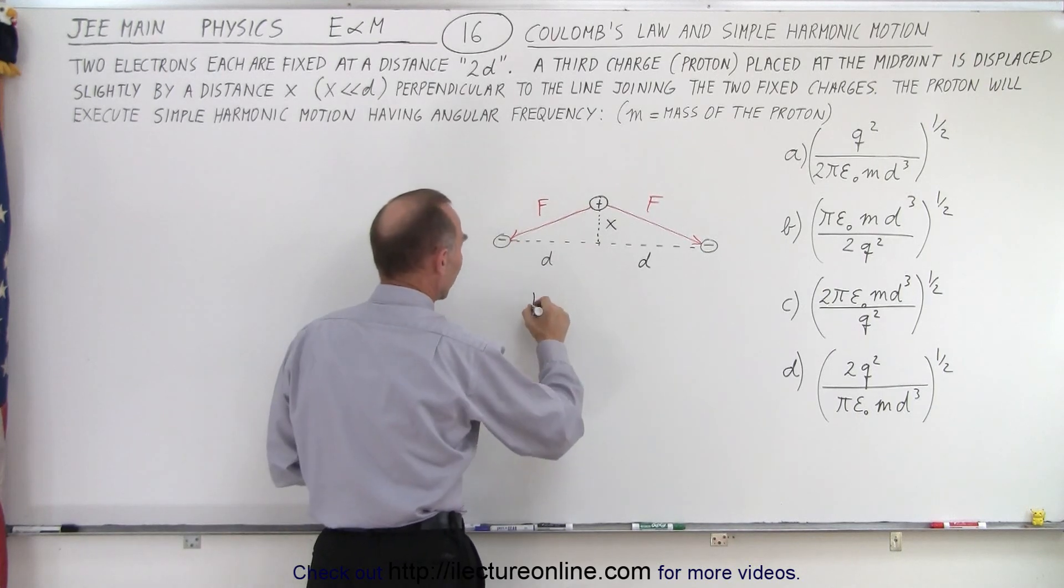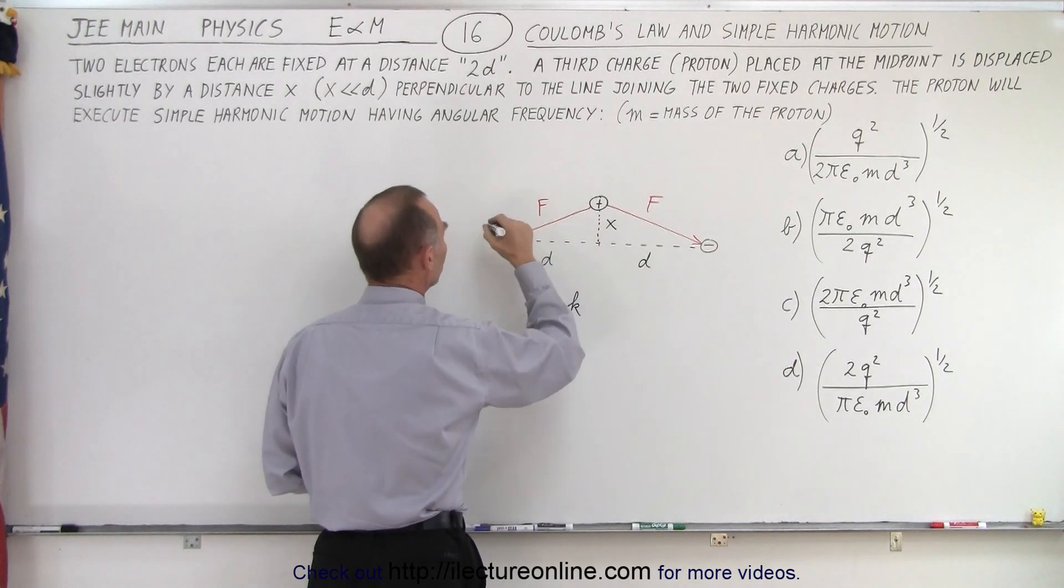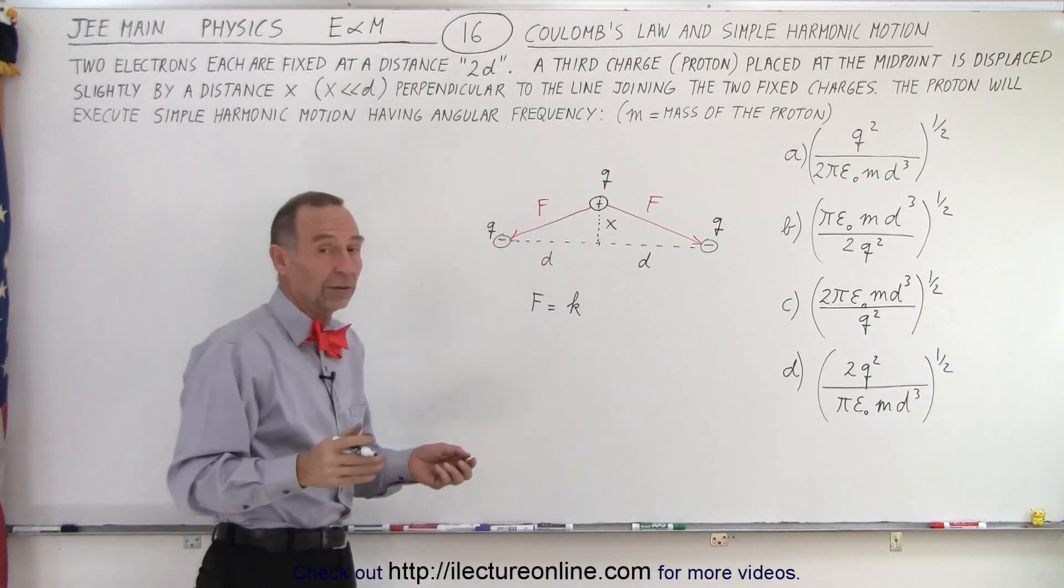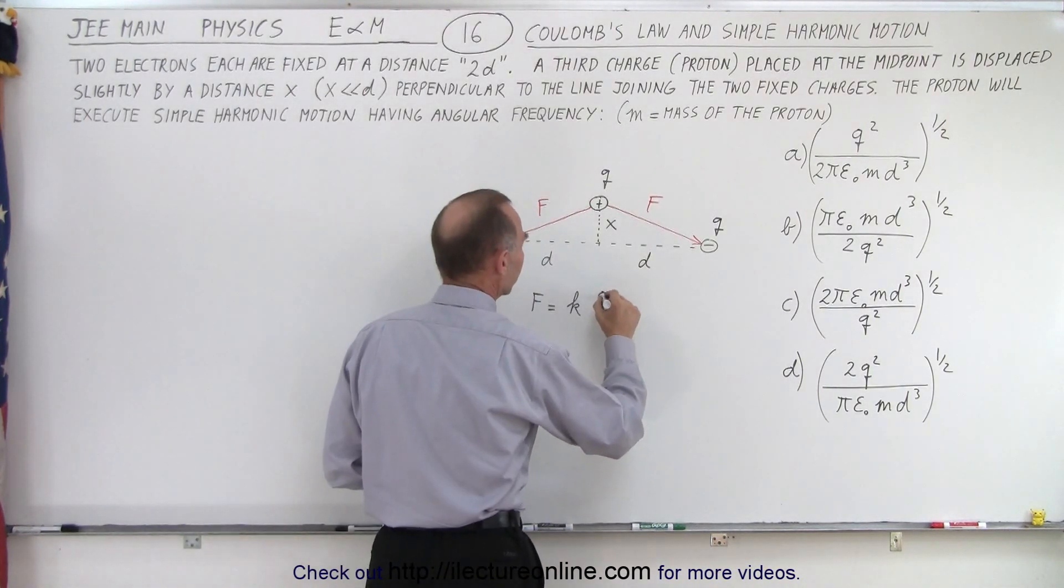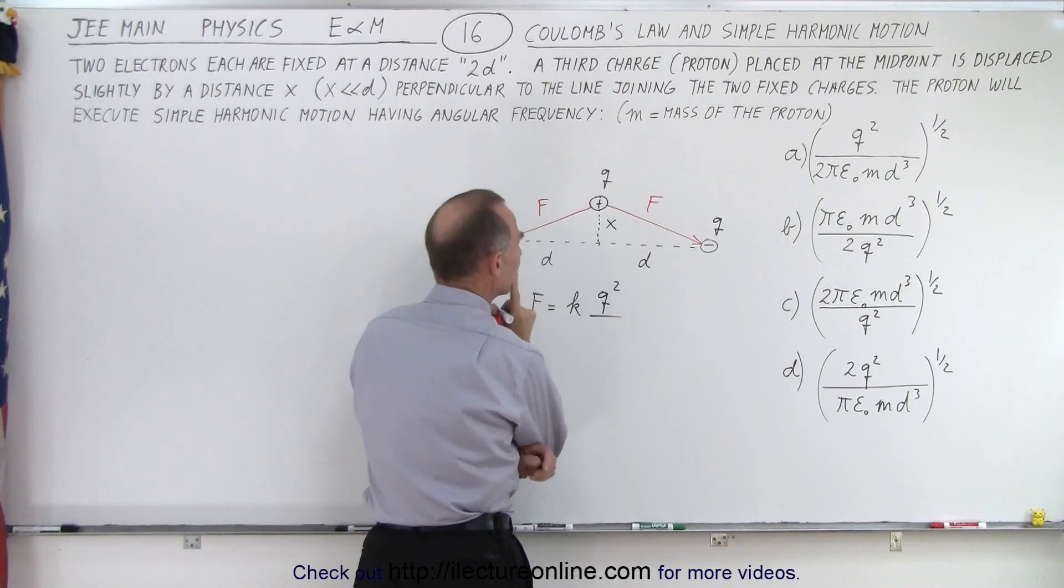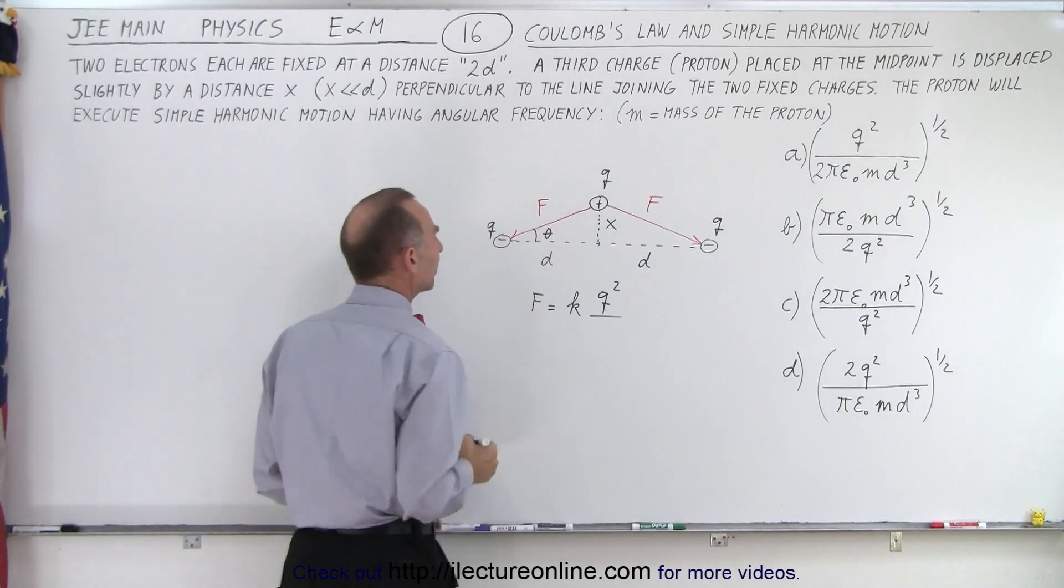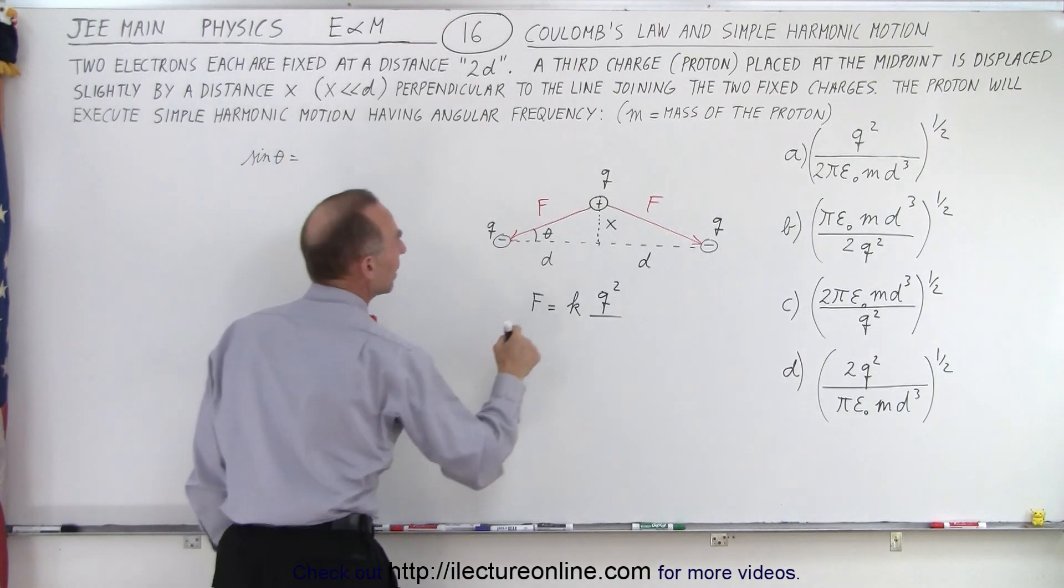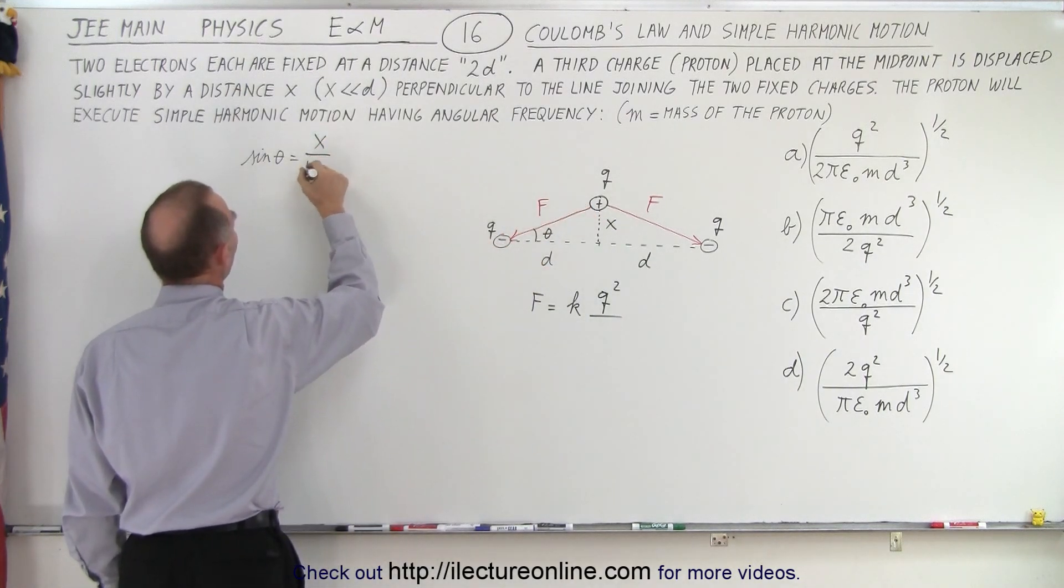So we have the Coulomb force F is equal to K times the product of the two charges. So if the charge here is Q, and the charge there is Q, then the charge on the proton will be Q as well. It's the charge of a single electron, negative for the electrons, positive for the protons. So it would be the product of the two charges Q squared divided by the distance between them. Now, the distance between them. Let's say that we have the angle theta here, and we can say that the sine of theta is equal to the opposite side over the hypotenuse. So it would be X over the hypotenuse.